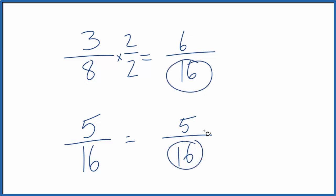Now the denominator is the same, so we can compare the numerator. So 6, that's larger than 5. So 3 eighths is larger than 5 sixteenths.